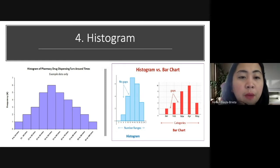But there are important differences between them. So our bar graph class, it has gaps between our x-axis, but with histogram, it has no gaps in between our x-axis.